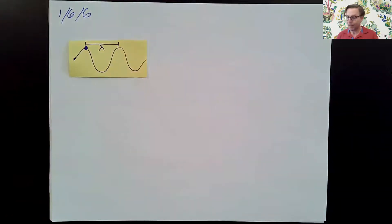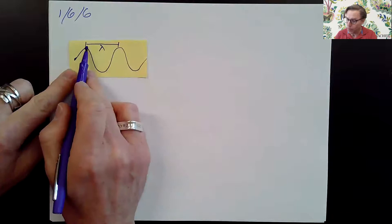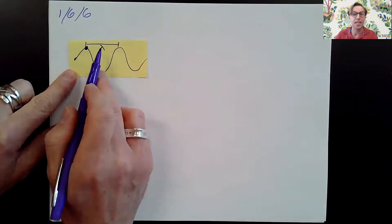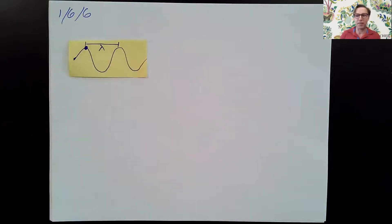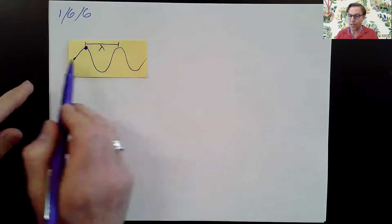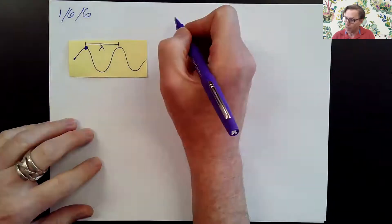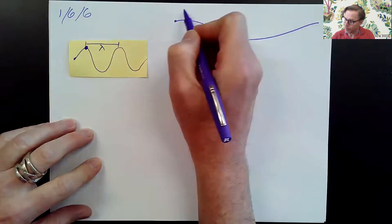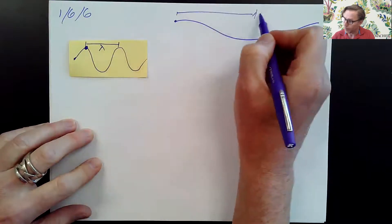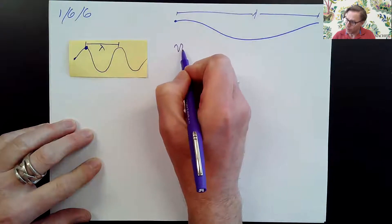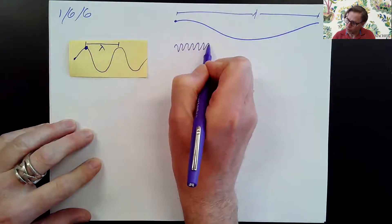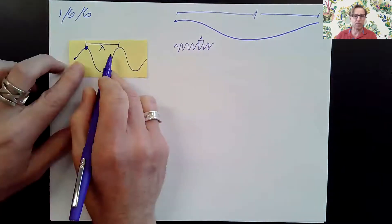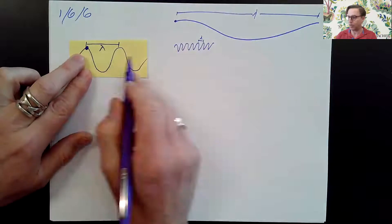I've drawn a little wave here, and I've indicated that the distance from one crest to the next crest is lambda — that's the Greek letter lambda, the wavelength. It's a very important distance when talking about waves. Here's a wave with a really long wavelength, and here's a wave with a really short wavelength. That little distance is lambda, and then this is somewhere in between.